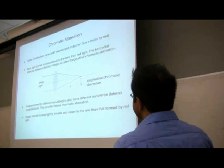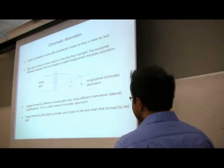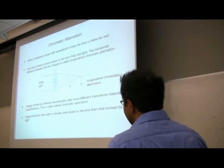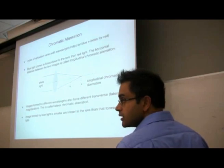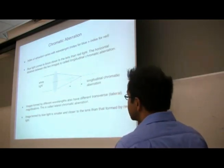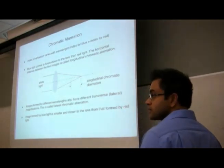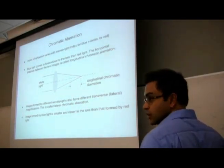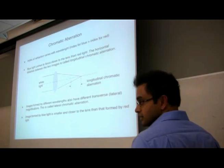You can have longitudinal chromatic aberration, where blue light comes to focus closer to the lens than red light, because blue has a higher refractive index. If you're imaging an object with both colors, you'll form its image at different locations for red and blue. If you have a multicolored object like a flag, you'll see different color bands at different positions, or at a single location the image will be blurred.